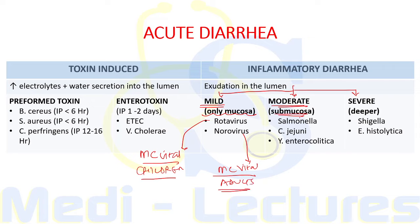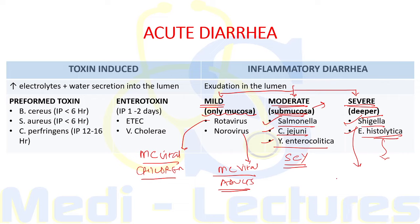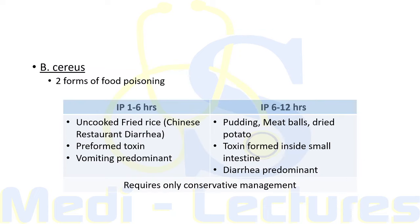Moderate inflammatory diarrhea involves the submucosa; since submucosa has blood vessels, this can lead to systemic infection. Moderate category is caused by Salmonella, Campylobacter jejuni, and Yersinia enterocolitica — mnemonic SCY or SKY. The severe category involves deeper layers and includes Shigella and Entamoeba histolytica, which causes flask-shaped ulcers. Importantly, Shigella also releases shiga toxin, responsible for hemolytic uremic syndrome.